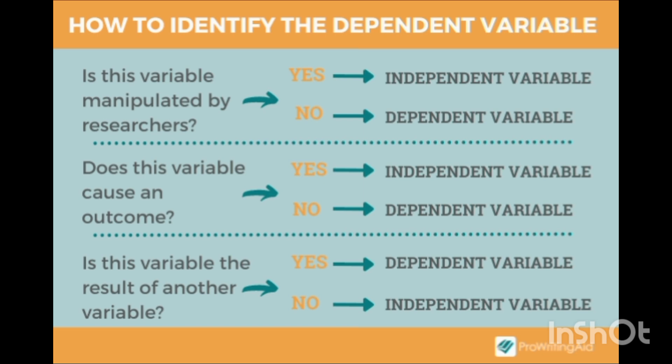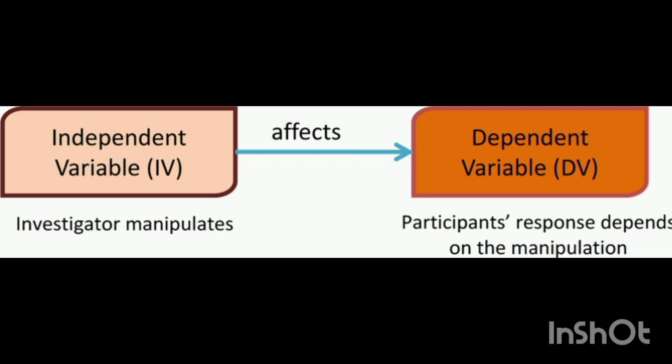How to identify the dependent variable: Is this variable manipulated by the researchers? If yes, it is the independent variable; if no, it is the dependent variable. Does this variable cause an outcome? If yes, it is independent; if no, it is dependent. Is this variable the result of another variable? Yes for dependent, no for independent.